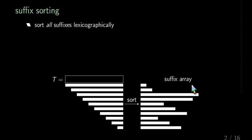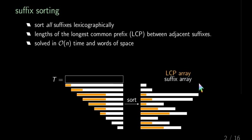The suffix array is often accompanied by the LCP array, which stores the length of the longest common prefix, or shortly LCP, between adjacent suffixes. We can compute both arrays in linear time and linear number of words of space, where n is the length of the text T.